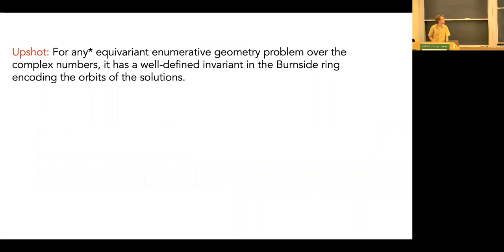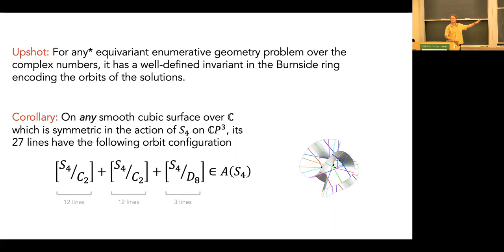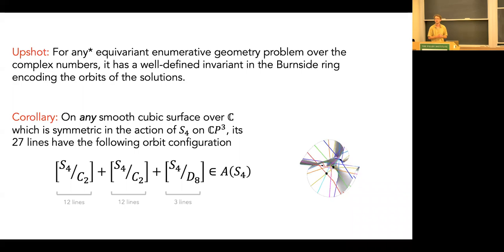Now with this formalism we can approach any equivariant enumerative geometry problem and get well-defined invariants in the Burnside ring encoding orbits of solutions. Returning to our original problem: for a smooth cubic surface symmetric under S4, counting its 27 lines gives — for any such cubic surface — the following orbit configuration: a block of 12 lines in one orbit with isotropy group C2, another 12 lines also with isotropy C2, and the remaining 3 lines with isotropy group D8. This holds for any symmetric cubic surface. That's where I'll end — any questions?